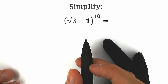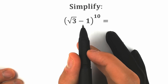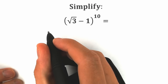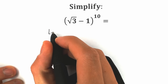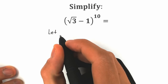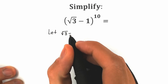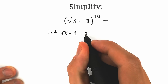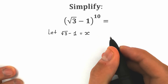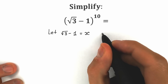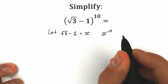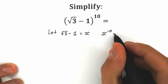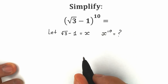First of all, let's call square root of 3 minus 1 as x. So let's write it right here. We have: let square root of 3 minus 1, this expression in parentheses, equal to x. Basically, we need to find x to the 10th power.